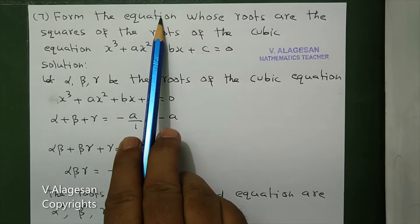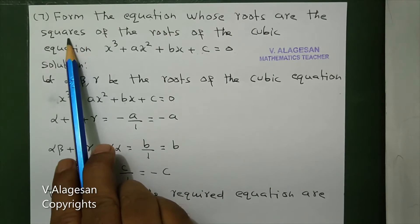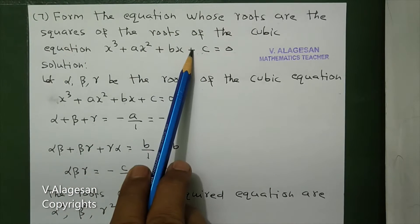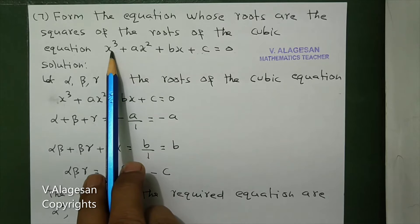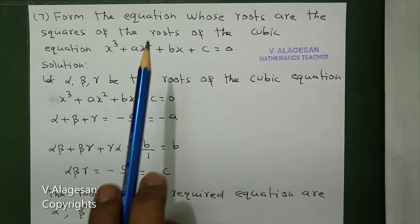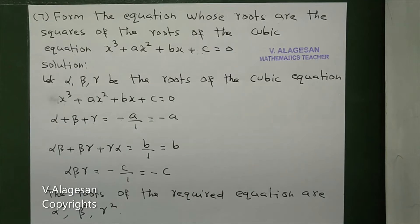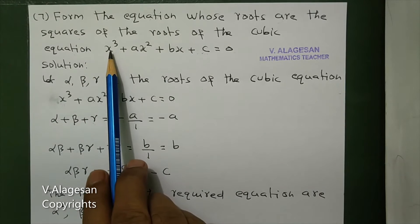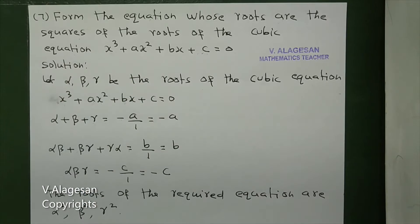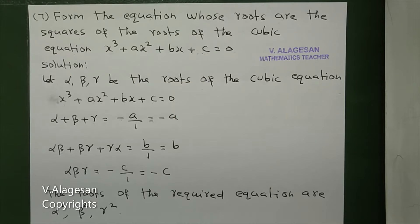Form the equation whose roots are the squares of the roots of this equation. We have to find a cubic equation. Suppose the roots of the given equation are alpha, beta, gamma. So the roots of the required equation are alpha squared, beta squared, and gamma squared.